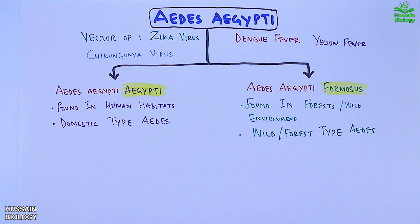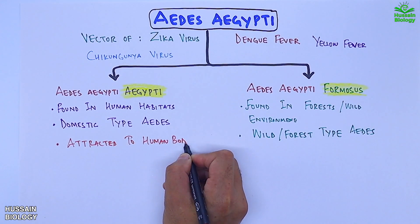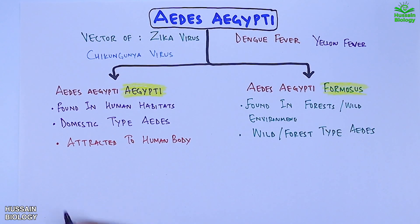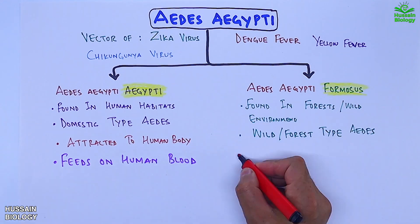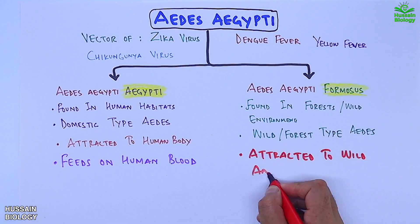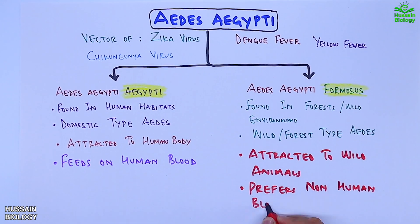The domestic Aedes is attracted to the human body and feeds on human blood, whereas the forest or wild type Aedes is attracted to wild animals and prefers non-human blood.